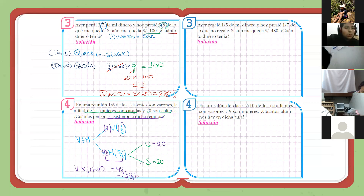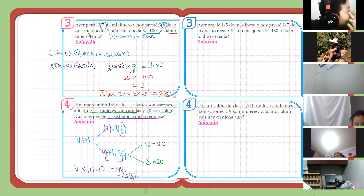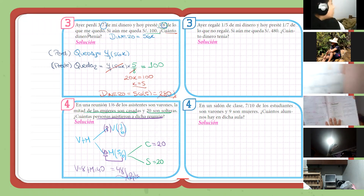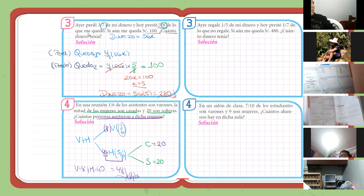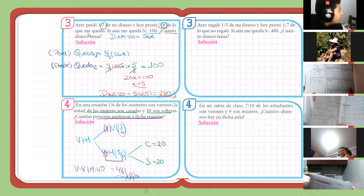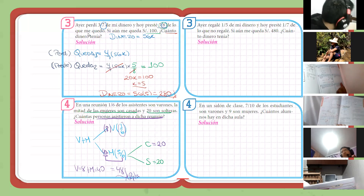Listo, chicos. Hemos acabado un minuto antes de la campana, prácticamente. Ahora sí, voy a tomar la foto de lo que hayan copiado, por favor sus libros. Para tomarles foto, chicos. Hasta donde hayan quedado, rápidamente. Tienen cinco segundos. Cuatro, tres, dos, uno. Tomo el screen con los que estén. Los que tomo la foto ahí tienen su nota de participación.